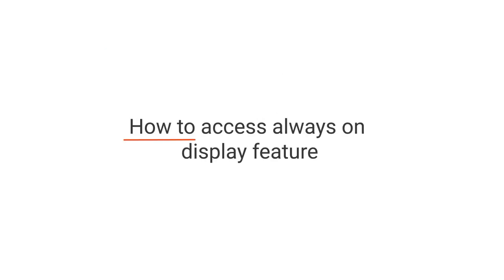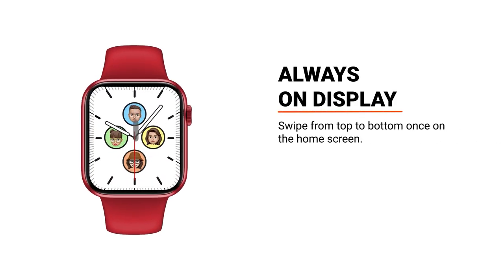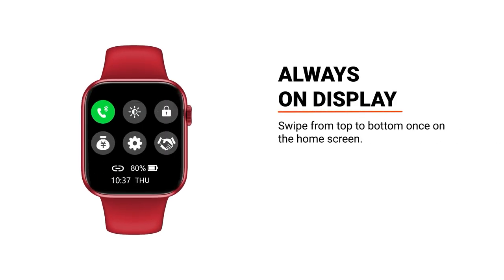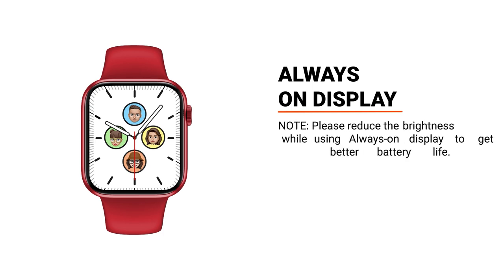How to access the always-on display feature: swipe from top to bottom once on the home screen. Tap on the display option and enable it. You can adjust the brightness of the watch accordingly. Click X to cancel or tick to confirm. Please reduce the brightness while using always-on display to get better battery life.